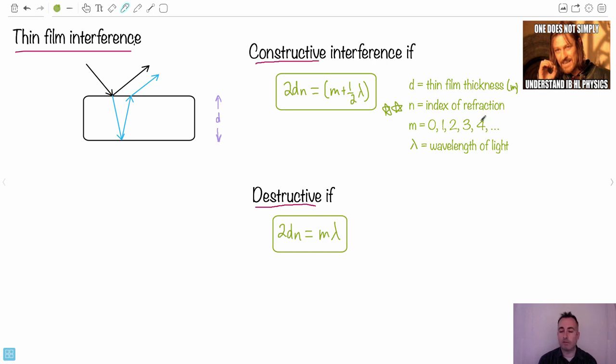So M can be 0, 1, 2, 3, 4, whatever numbers you want. And lambda is the wavelength of light, which is measured in meters. And index of refraction has no units. So we end up with this equation right here, that we have constructive interference. We'll say if 2DN equals M plus a half lambda. Now we also have destructive interference of 2DN equals M lambda. Basically, you just have to look at what it is that they're giving you and you can figure this out.